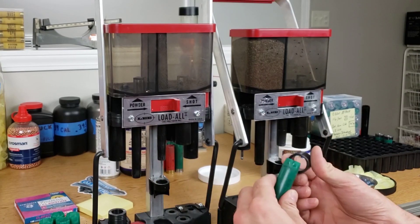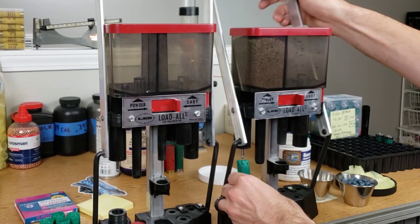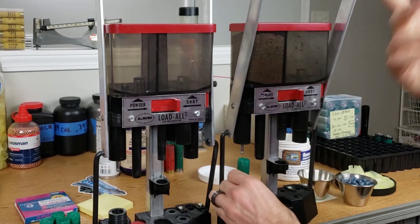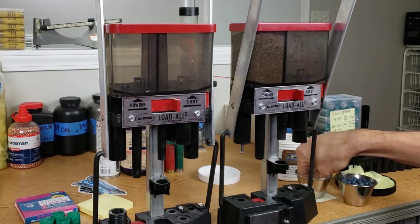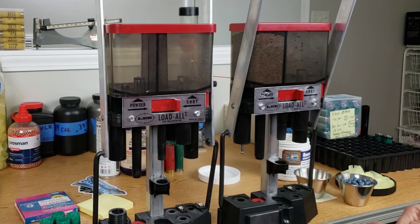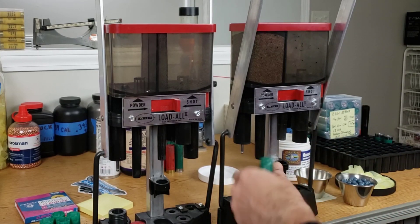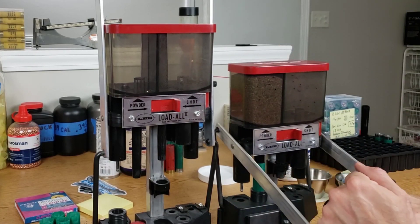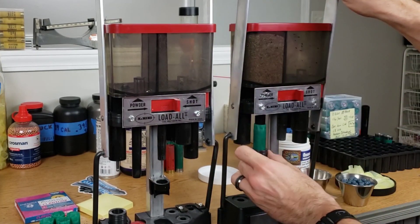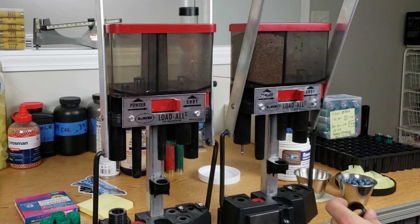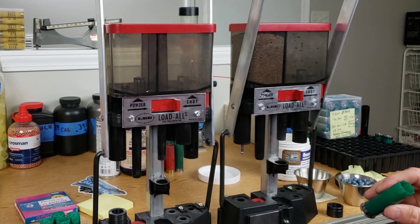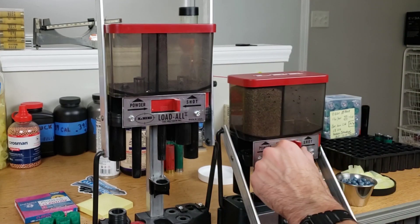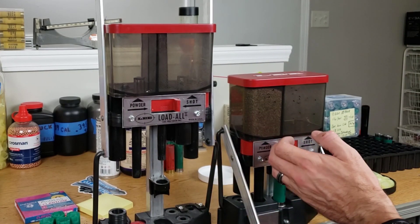All right folks, welcome back. Today we're doing some more 12-gauge. It's actually been a while since we've been at the bench, but I still have to test all the other stuff we've been loading up. Today we're going to be doing an 8-pellet double-ought buckshot load with International powder. I believe we have Winchester primers.